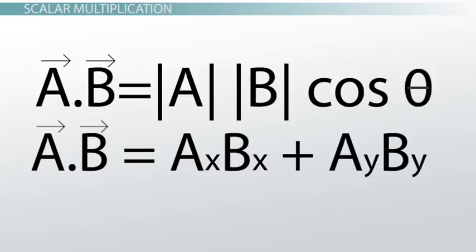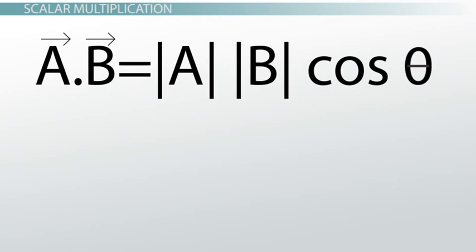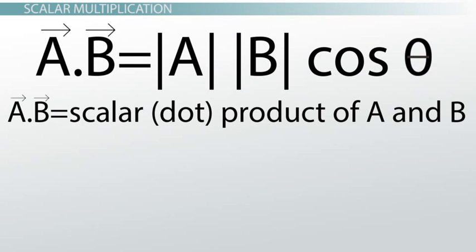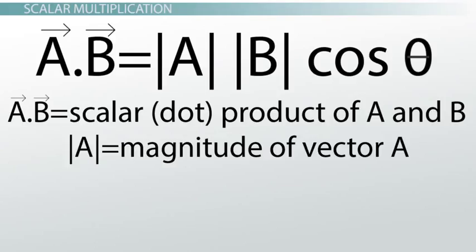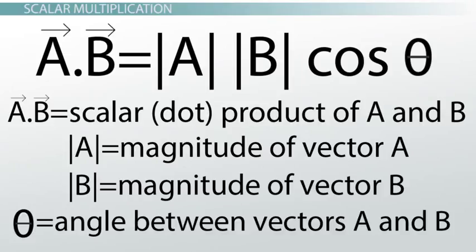There are two main equations for calculating a dot product. If you have the overall magnitudes and angles of the vectors, you use this equation: multiplying vector a by vector b, you take the magnitude of vector a, multiply it by the magnitude of vector b, and multiply that by the cosine of the angle between them. This is like taking your displacement and multiplying it by F cosine theta — the component of the force that acts in the direction of the displacement.